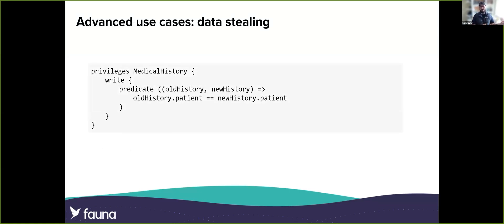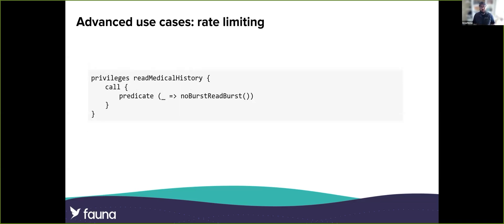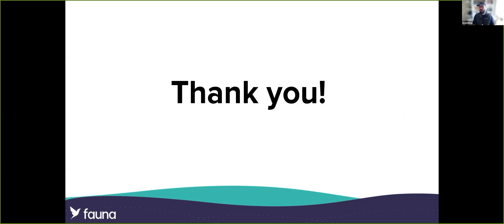These are the basic building blocks of systems that can be much more advanced. You can have predicates on writes — for example, you can make sure that whoever is writing to a medical history cannot change the patient, so you can't steal someone else's entries or create a fake entry and assign it to someone else. You can also imagine an access log every time someone reads medical history, where metadata allows you to compute a burst function — making sure reads occur only at a pace compatible with human interaction, so a script trying to read as much as possible will no longer be able to do so. With that, I conclude my part of the demo. Back to you, Wyatt.